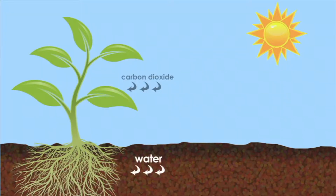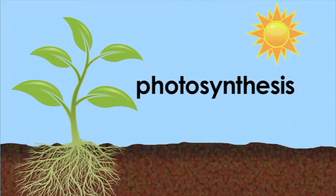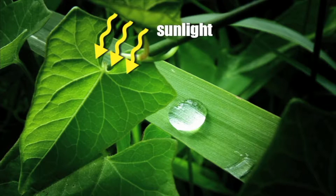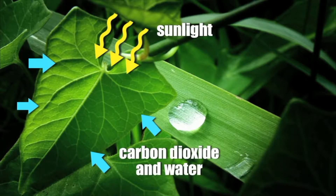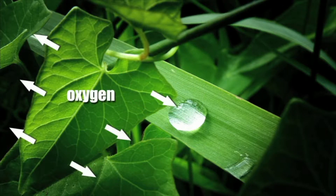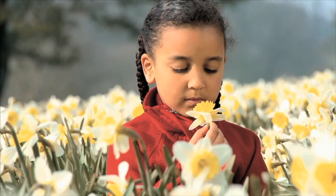Leaves need water, carbon dioxide, and sunlight to make food. The process of making food is called photosynthesis. Photosynthesis takes place inside the leaves. A key ingredient in photosynthesis is chlorophyll. Chlorophyll captures energy from sunlight and also gives leaves their green color. Using the energy from sunlight, mixed with water and the carbon dioxide absorbed by the plant, each leaf manufactures food the plant needs to live, including sugars, starches, and fats. Another byproduct of photosynthesis is oxygen. Animals and people need oxygen to breathe — that's why without plants, life on earth would be impossible.